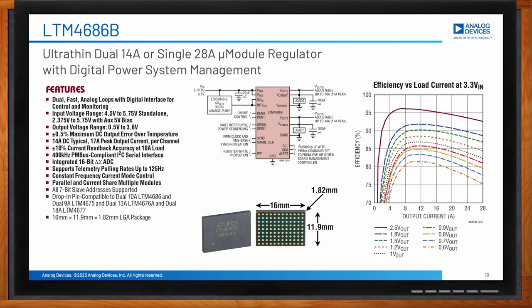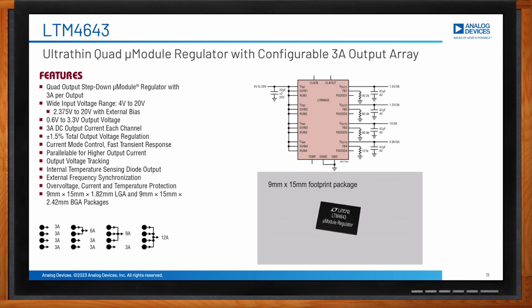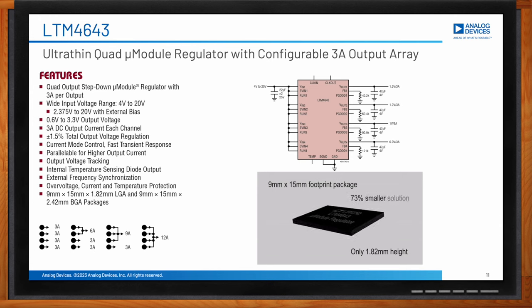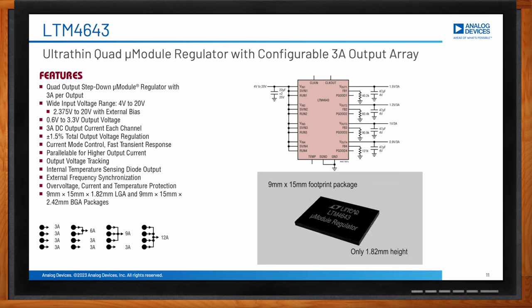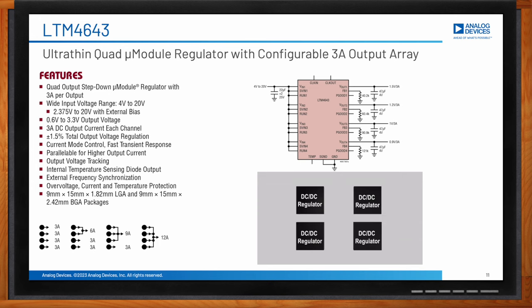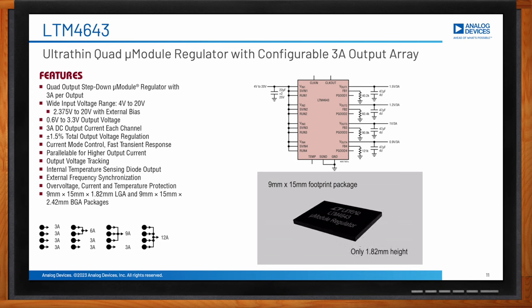You also mentioned a quad micromodule regulator. That's correct — it is a 3 amp ultra-thin step-down micromodule regulator with a wide input voltage range from 4 volts to 20 volts, going down to 2.375 volts with external bias. The output voltage is from 0.6 to 3.3 volts. It employs current mode control in its feedback loop for fast transient response, and outputs can be paralleled for higher output current. Multiple outputs in a single module lead to a considerably smaller solution with enhanced electrical and thermal performance.